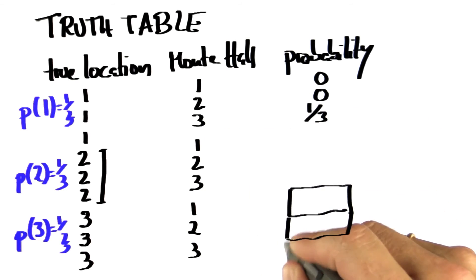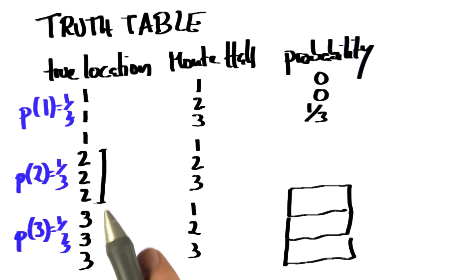Now, by analogy, you can now fill out for me the three probabilities that correspond to the true location being three and Monty showing me one, two, or three into these three things over here.